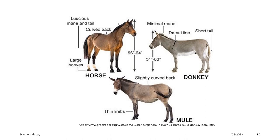We can also differentiate the horse, donkey, and mule in terms of the mane. Horses have a luscious mane, while donkeys have a minimal mane. On the tail, horses again have a luscious tail, while donkeys have a relatively shorter tail compared to the horse. In terms of the limb, mules have a relatively thinner limb. For the back, mules have a slightly curved back, horses also have a curved back, and donkeys are characterized by the presence of a dorsal line.